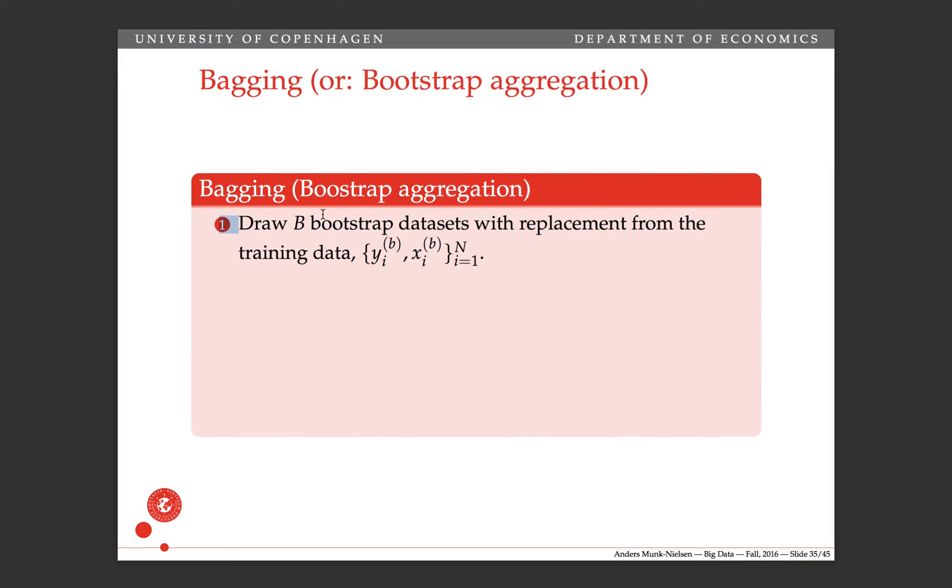The first thing you do is you draw B bootstrap samples with replacement from your training data. So you have some data set Y and X, and then you just draw with replacement N observations from that data set. You call Y_b lowercase b, that's the b'th bootstrap data.